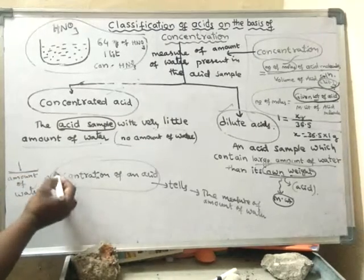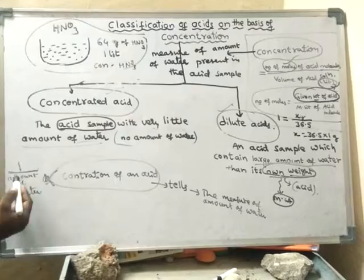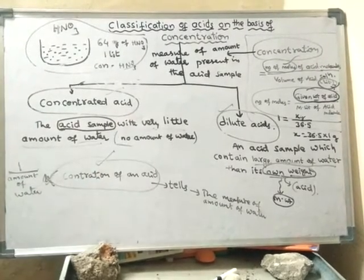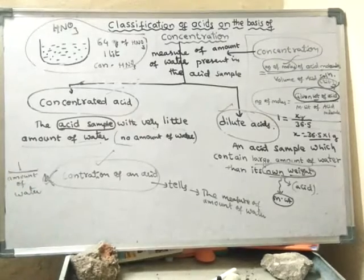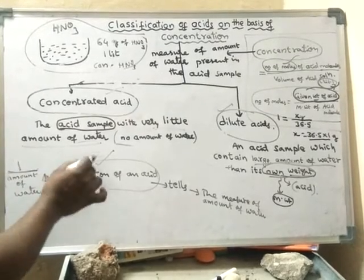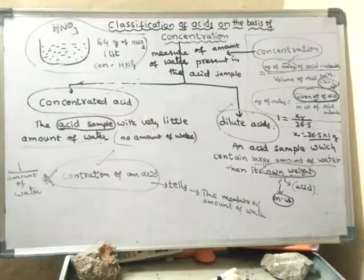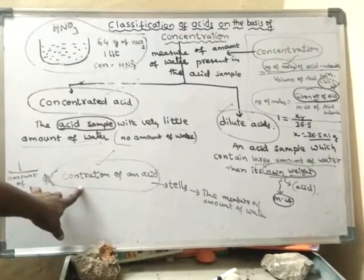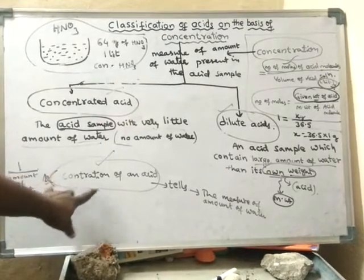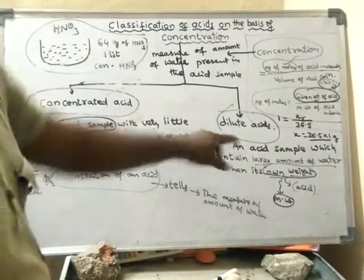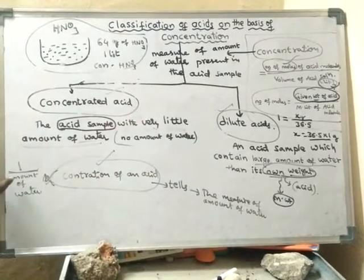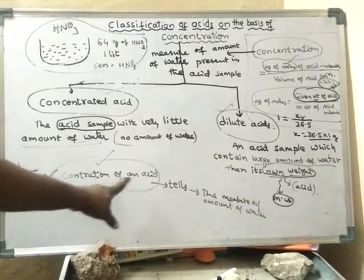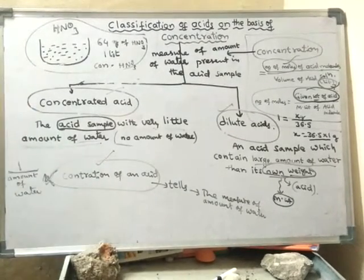Concentration of acid is inversely proportional to amount of water. If concentration of acid is more, then amount of water will be less. If concentration of acid is less, then amount of water will be more. If amount of water is more, then concentration of acid will be less — it is said to be dilute acid. If amount of water is less, then concentration of acid will be more — it is said to be concentrated acid.